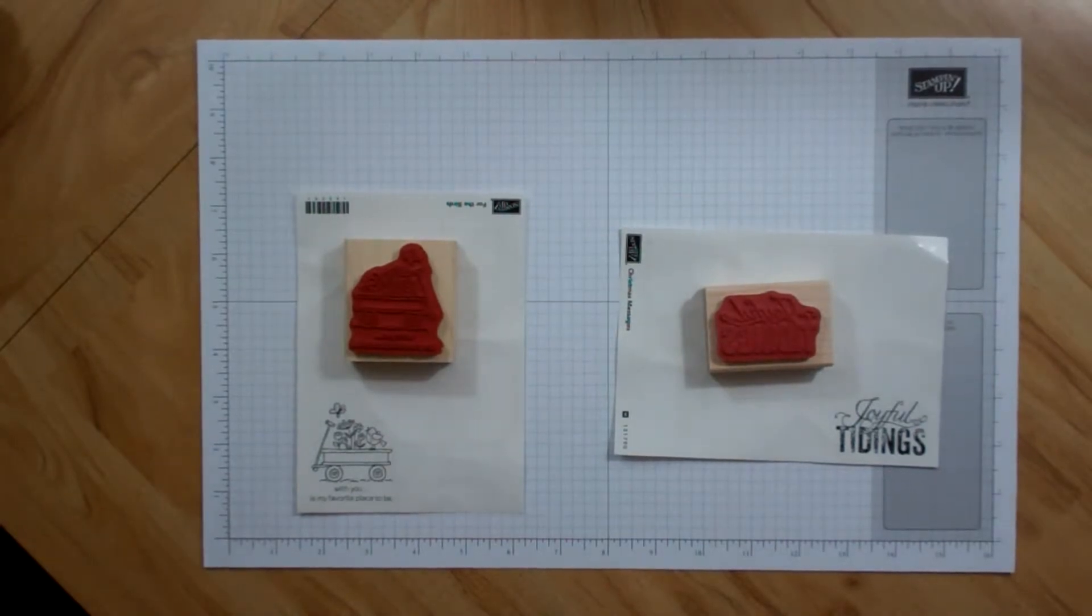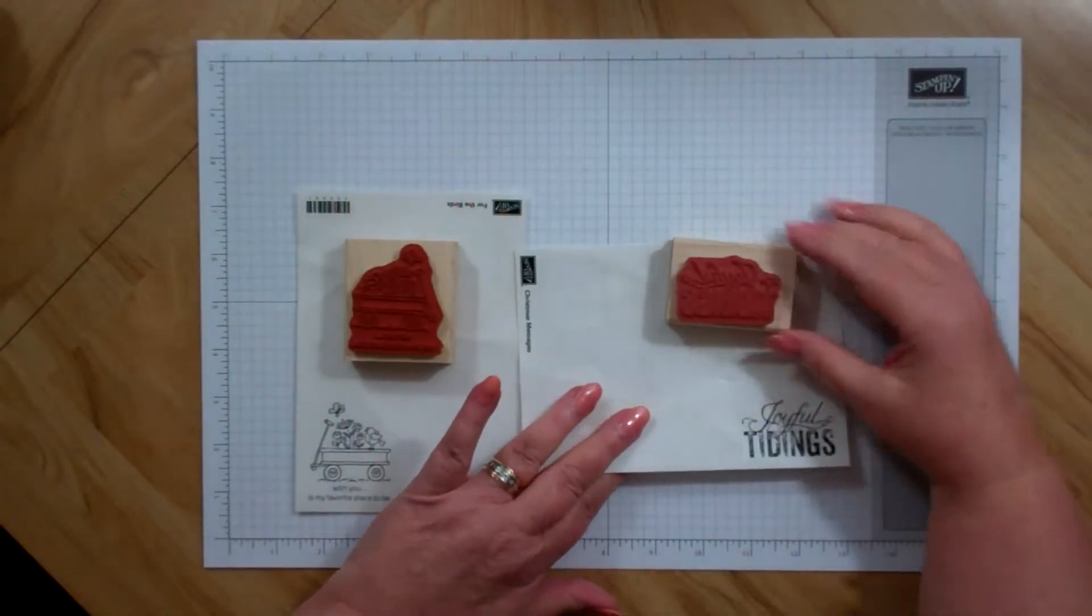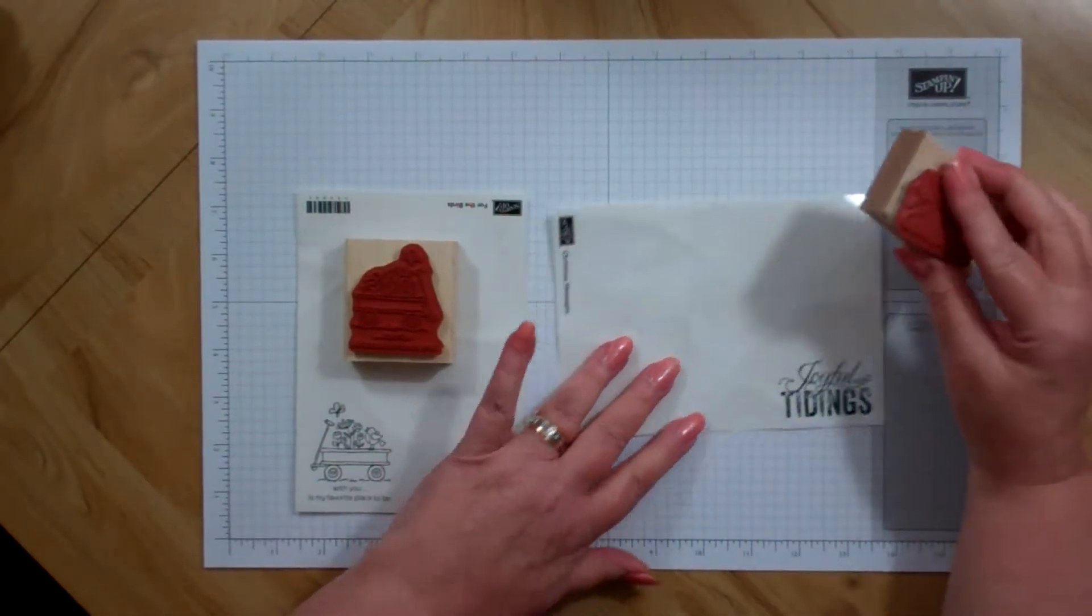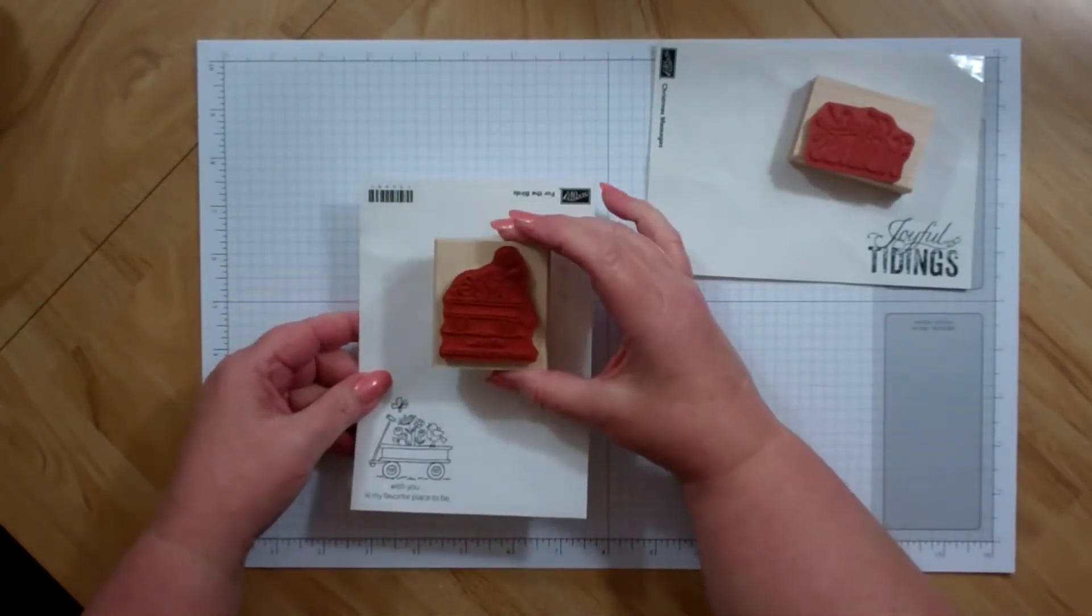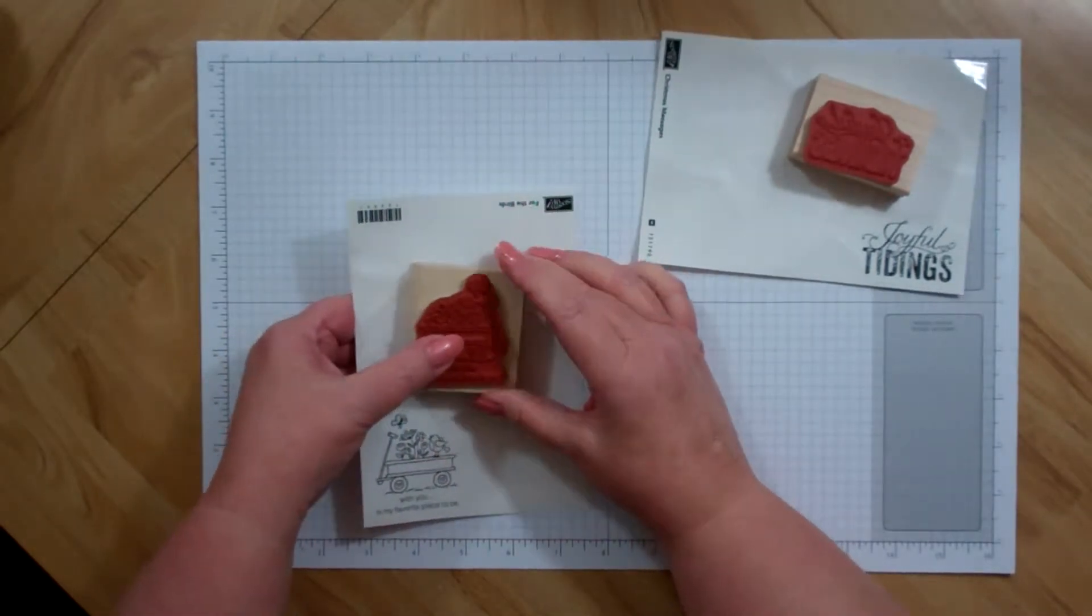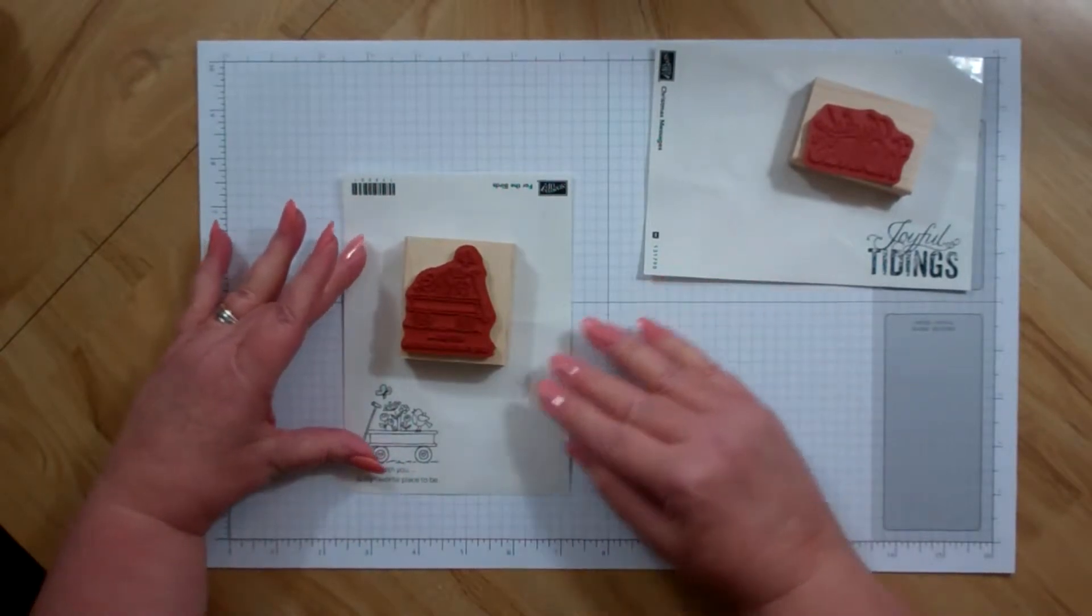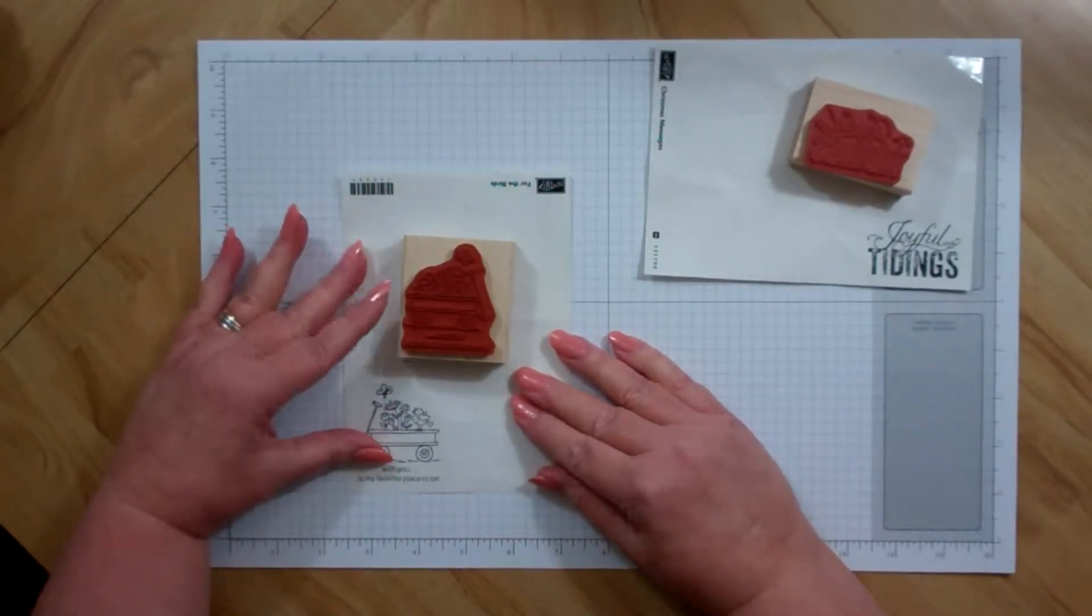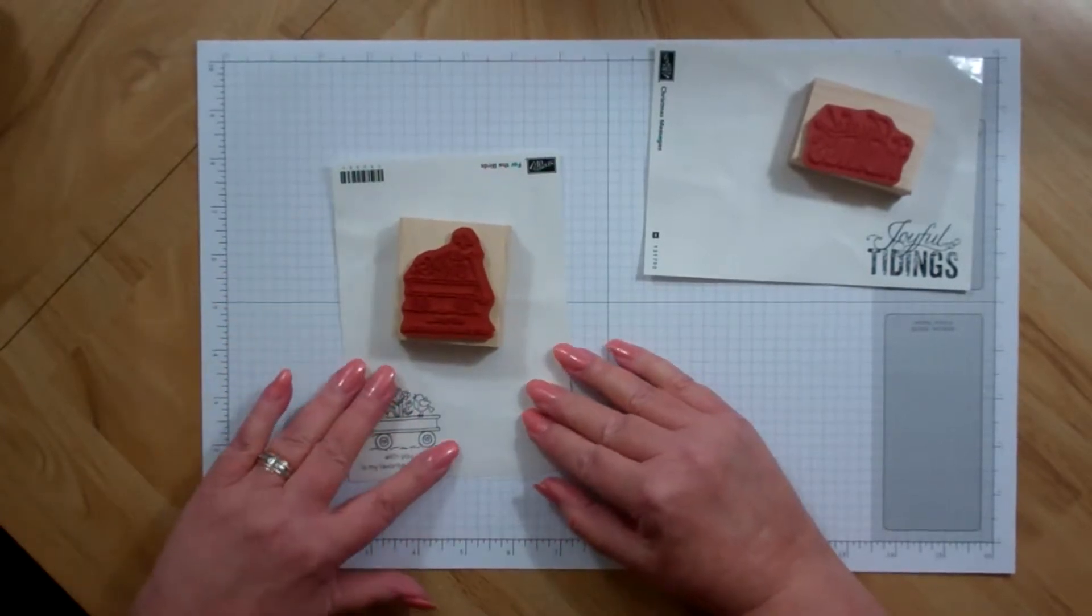So, today I've got two different styles of word stamps to show you. The one is the regular word stamp, and the other one is an image stamp with words attached. So, you line them up the same way, but I thought I'd show you both styles, just so you wouldn't get worried about the differences.